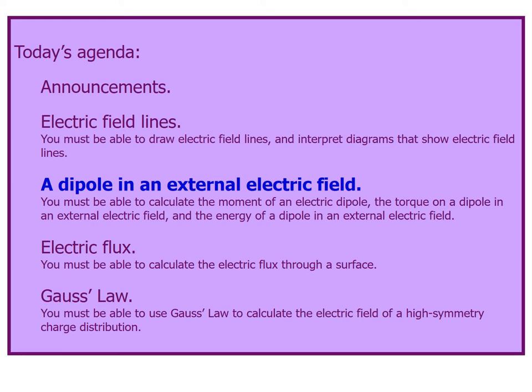Assalamu alaikum. So we have discussed in the last lecture what is a dipole. Now we have to see that if a dipole exists in an external electric field, what is its behavior. So you must be able to calculate the moment of an electric dipole, the torque on a dipole in an external electric field, and the energy of the dipole in an external electric field.